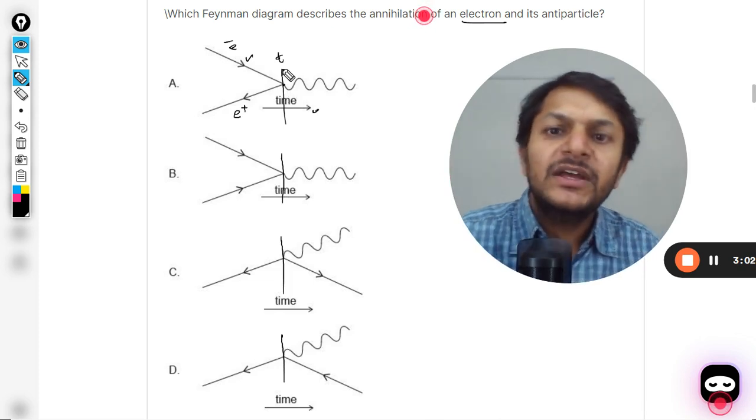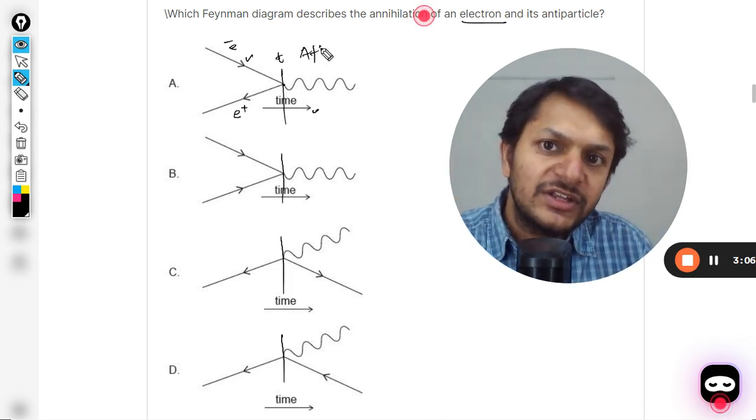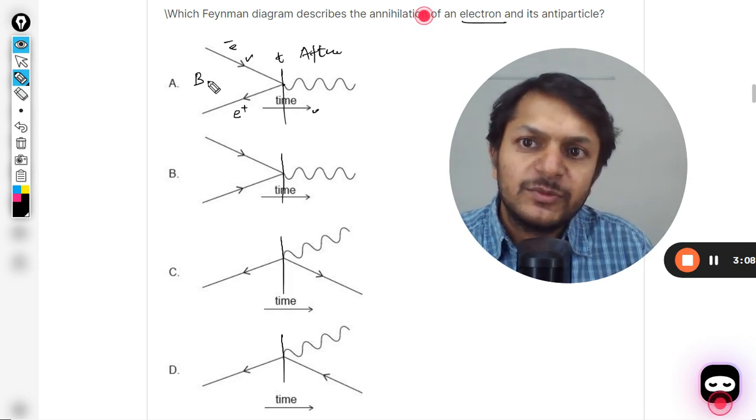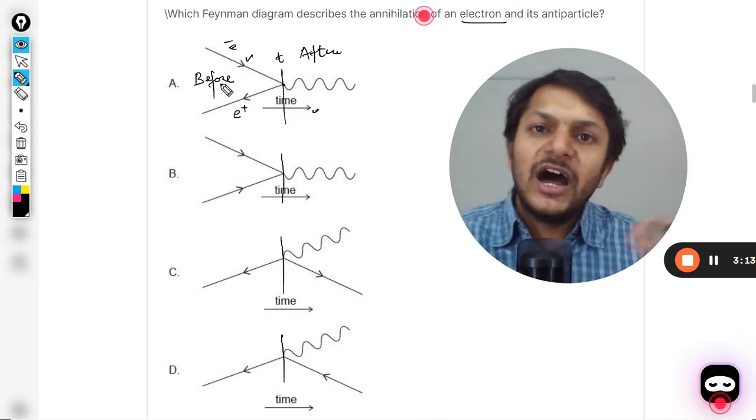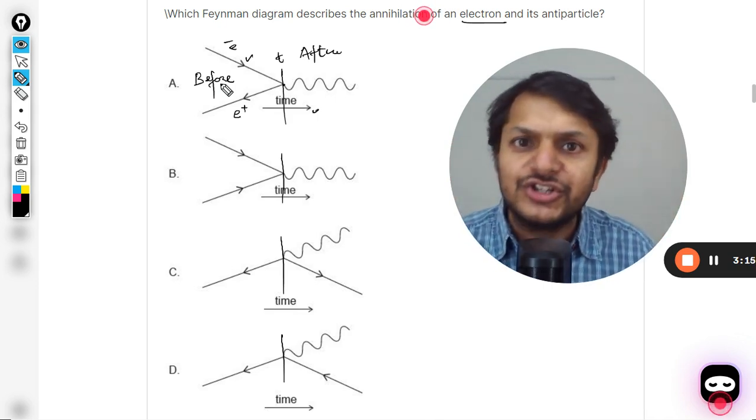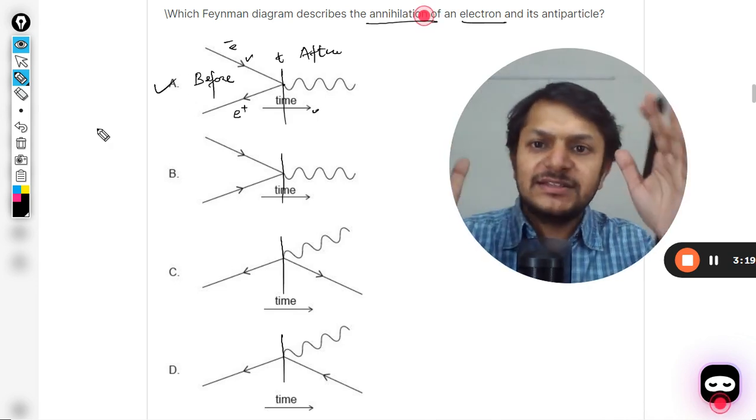After that you see, after this is after the collision and this diagram is before the collision. So before the collision there is one positive charge and one negative charge. After the collision you just have energy. This is called pair annihilation. So definitely A is the correct answer.